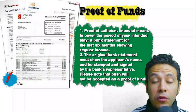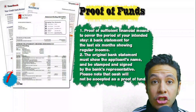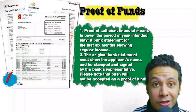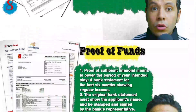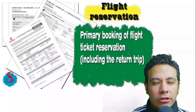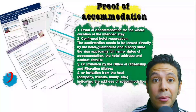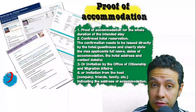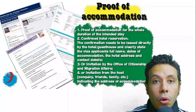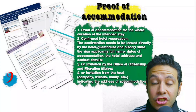You will also need to provide a bank statement showing your balance for at least six months, with your name, signed and stamped by the bank. Cash will not be accepted as proof of funds. You should also provide a flight reservation — an initial booking is usually sufficient, though some cases require a confirmed booking — and it must include a return ticket. For accommodation, provide a confirmed hotel reservation, or an invitation from a host or organization.